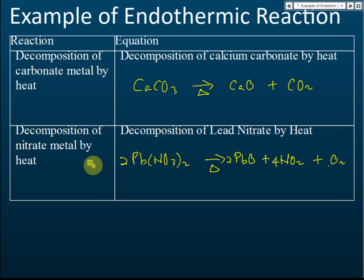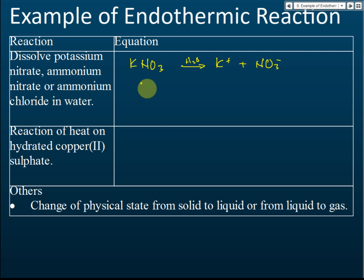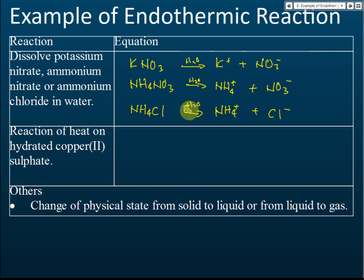Dissolving potassium nitrate, ammonium nitrate, or ammonium chloride in water is also endothermic. Potassium nitrate in water forms K⁺ and NO₃⁻ ions. Ammonium nitrate in water forms NH₄⁺ and NO₃⁻ ions. Ammonium chloride in water forms NH₄⁺ and Cl⁻ ions. All three processes absorb heat from the surroundings and are therefore endothermic reactions.